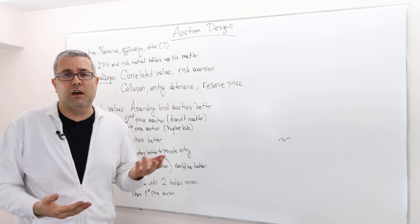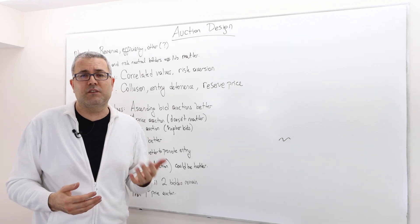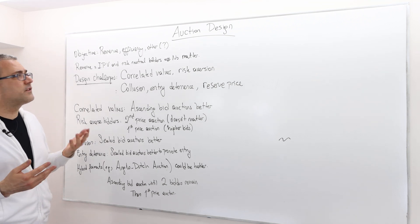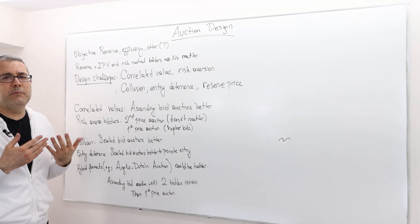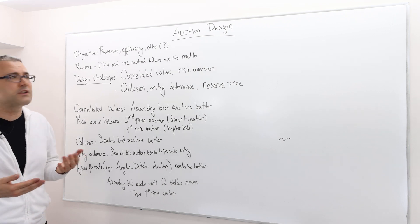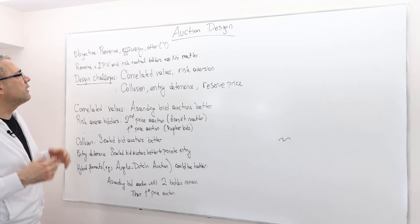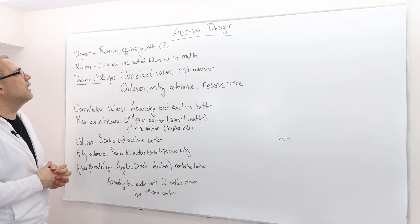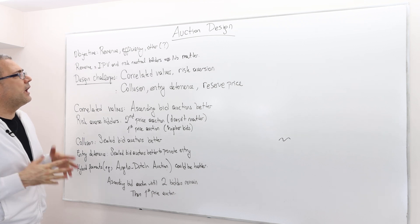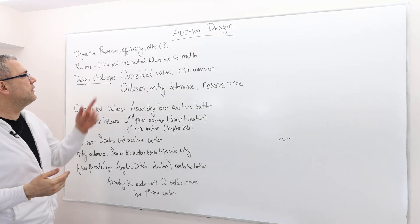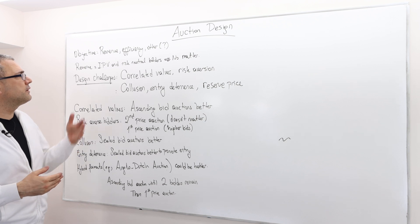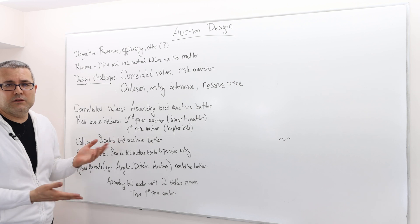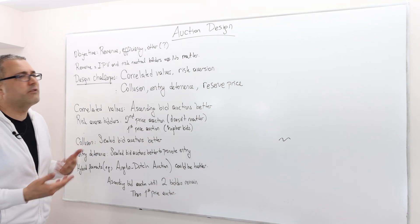This is a very well-studied subject and we have some answers. Obviously, the answers depend on the objective. Do you want to maximize your revenue or efficiency or do you have any other objective? Usually the revenue is the ultimate purpose, these are revenue maximizing auctions. As you know from the revenue equivalence theorem, independent private value auctions and risk neutral bidders make no difference because all auctions that we talked about are revenue equivalent.